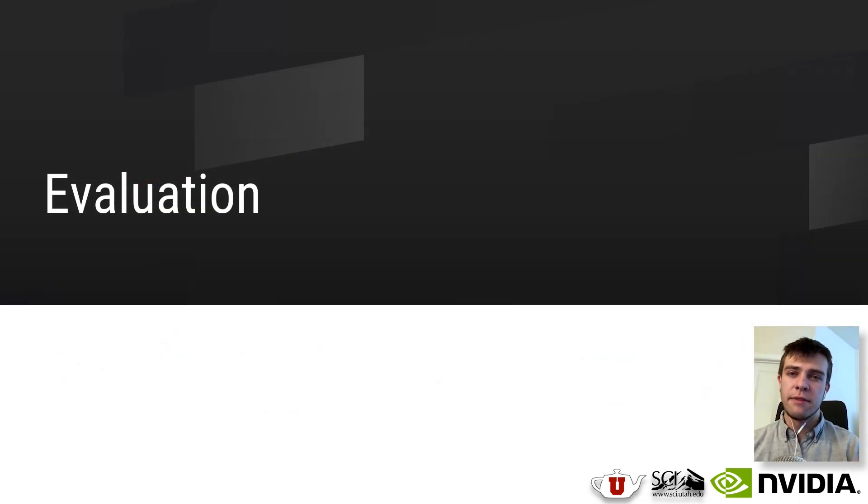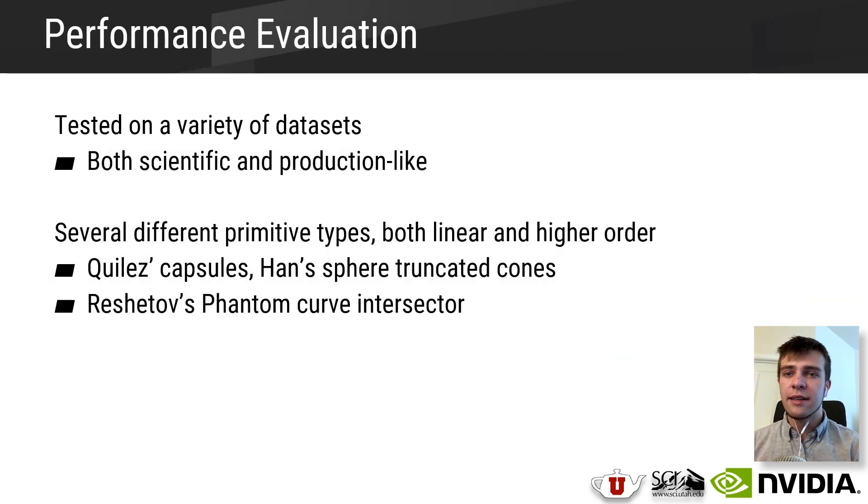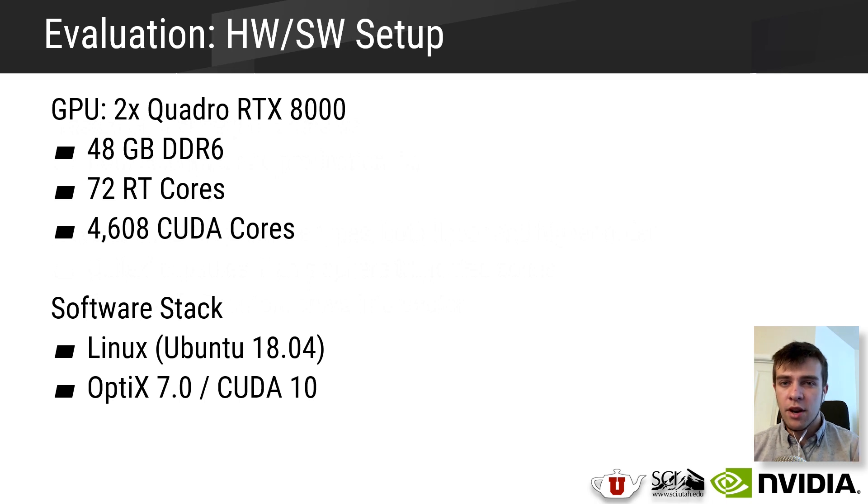Now let's move on to some evaluation. First, we decided to test our technique against both a collection of scientific visualization data sets, as well as a set of production hair data sets. We also decided to test our approach on a couple different intersector types. For the SciVis data sets, we use both Quilez's capsule as well as Han's sphere truncated cones, since both those intersectors are linear and they're going to give us an accurate visualization of the underlying data. For the production hair data sets, we additionally test against Reshetov's phantom curve intersector. As far as hardware goes, we tested on a pair of Quadro RTX 8000s, and for our software stack, we're using a mix of OptiX 7.0 and Ubuntu 18.04.